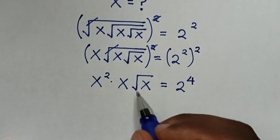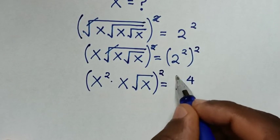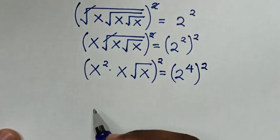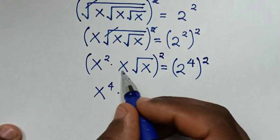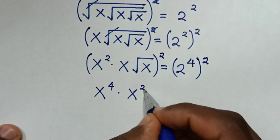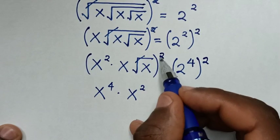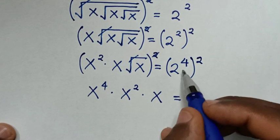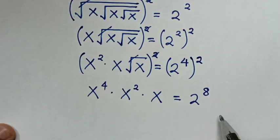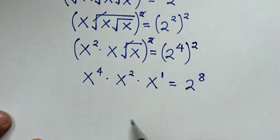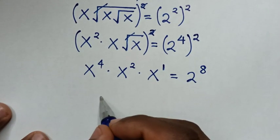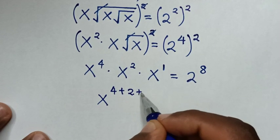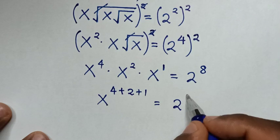Then in the next step, to cancel this square root we will multiply by squaring both sides. So it will be x squared times x to the power of 4, then times x squared, then this square root cancels, giving times x is equal to 2 to the power of 8. Since x is the same as x to the power of 1, and we have the same base x, it becomes x to the power of 4 plus 2 plus 1 equals 2 to the power of 8, so x to the power of 7 equals 2 to the power of 8.